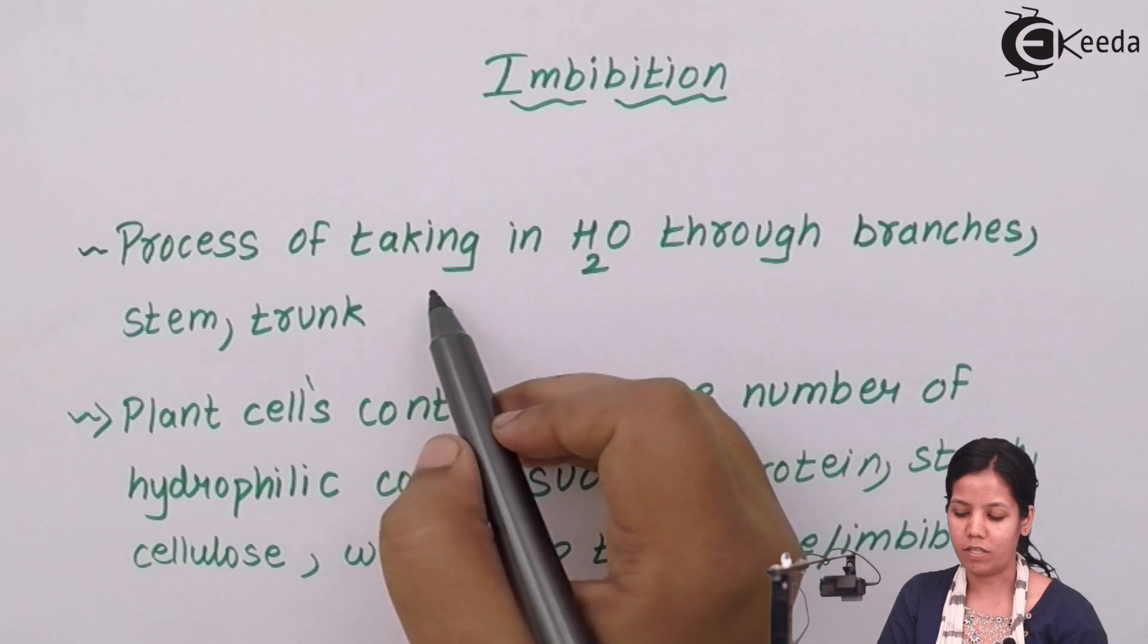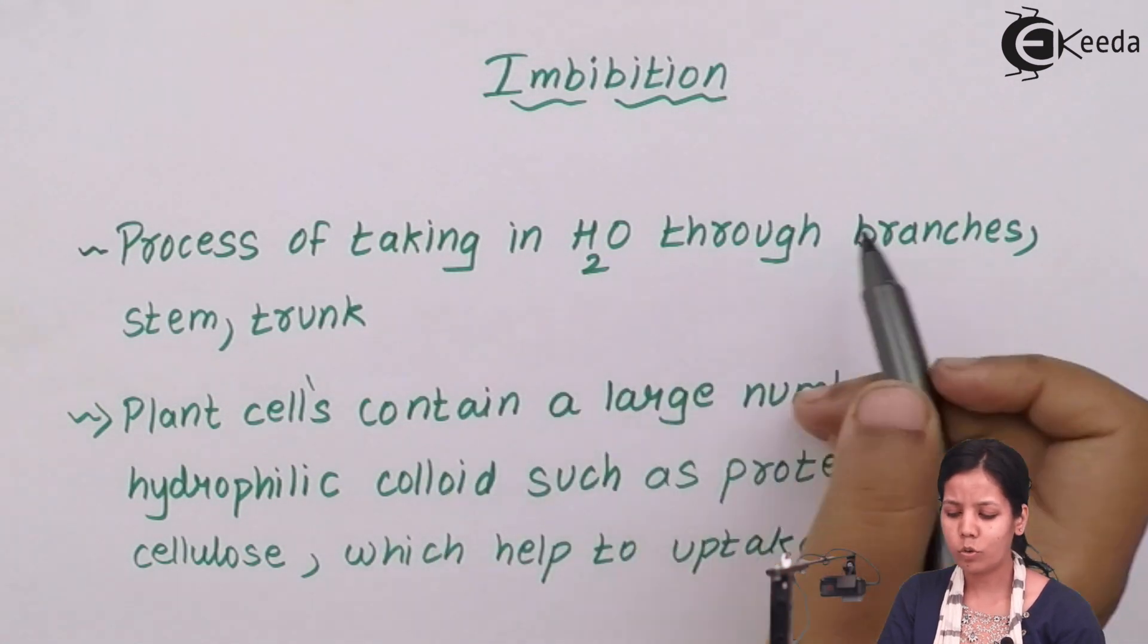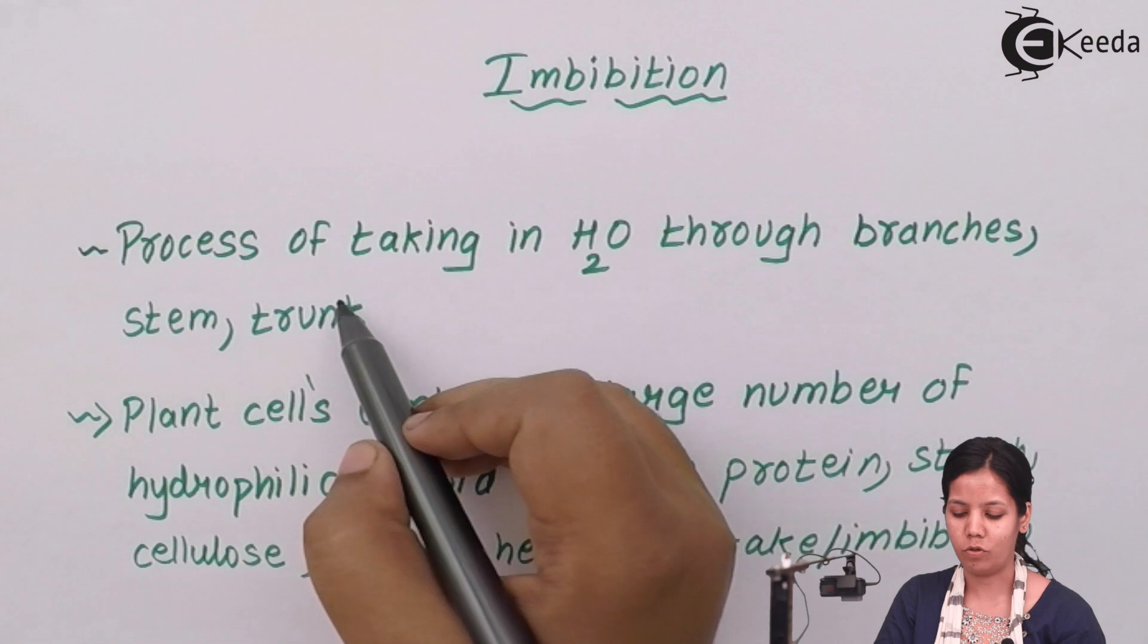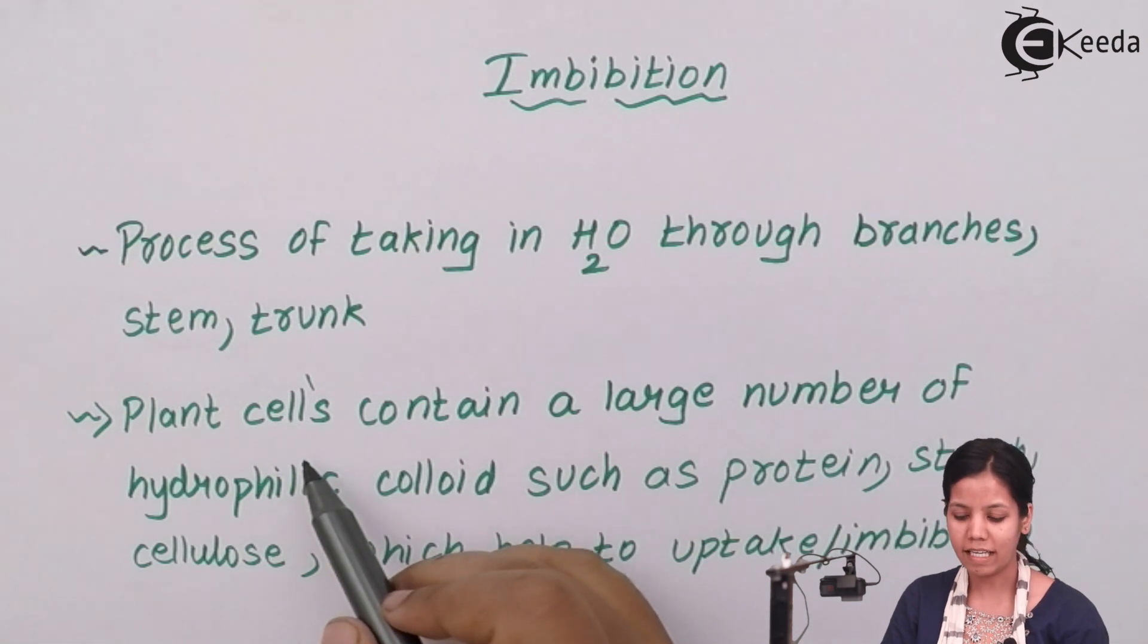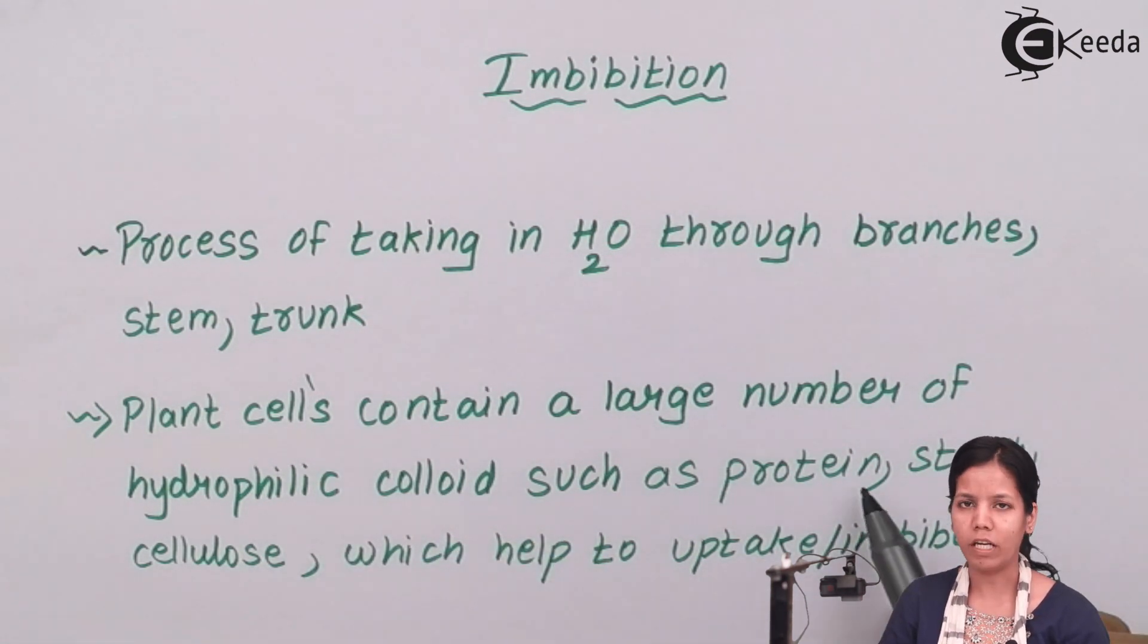Imbibition is a process of taking in water through the branches, stem or trunk of the tree. During imbibition, the upper surface of the plant, the brown color surface, is basically made up of cellulose, protein and starch.